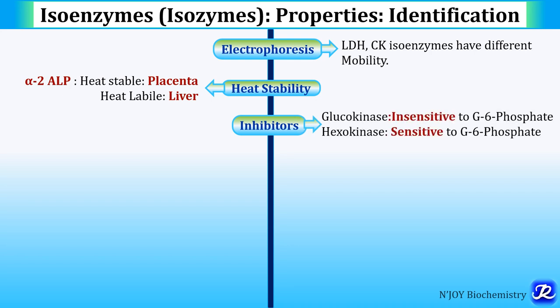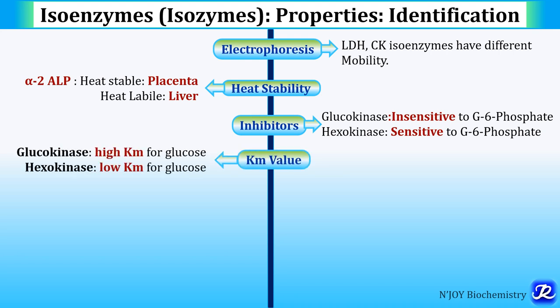Glucokinase is insensitive to its product glucose-6-phosphate — it is not inhibited by glucose-6-phosphate — while hexokinase is sensitive to glucose-6-phosphate and is inhibited by it. The Km value is also different for different isoenzymes: glucokinase has a high Km for glucose while hexokinase has a low Km for glucose.